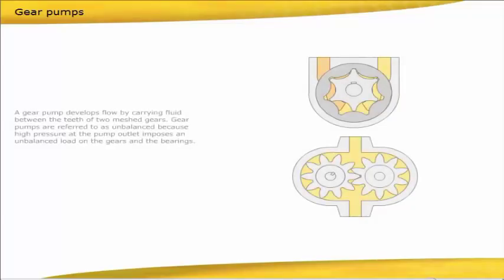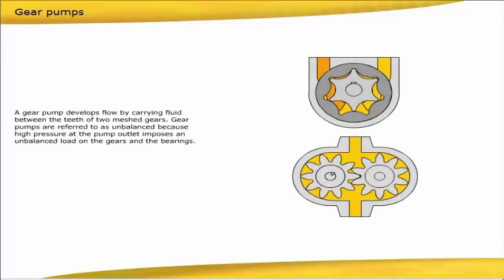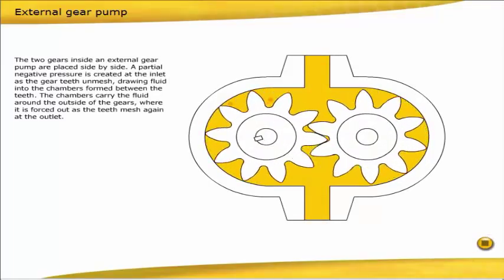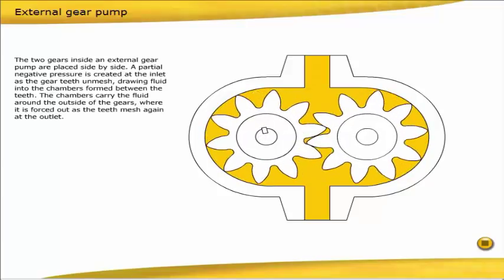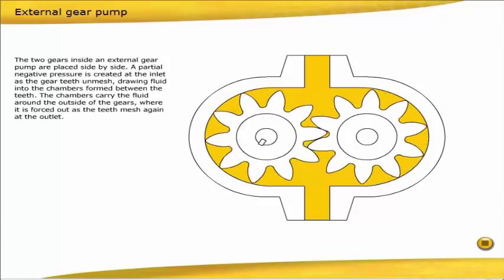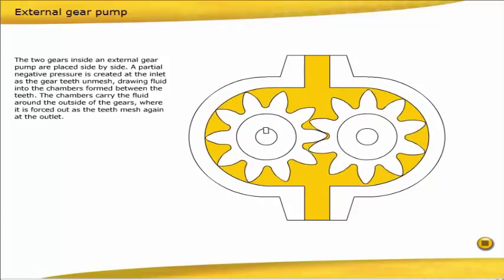A gear pump develops flow by carrying fluid between the teeth of two meshed gears. Gear pumps are referred to as unbalanced because high pressure at the pump outlet imposes an unbalanced load on the gears and the bearings. Normally, they are used in hydraulic systems with pressure up to 20 MPa. The two gears inside an external gear pump are placed side by side. A partial negative pressure is created at the inlet as the gear teeth unmesh, drawing fluid into the chambers formed between the teeth. The chambers carry the fluid around the outside of the gears.